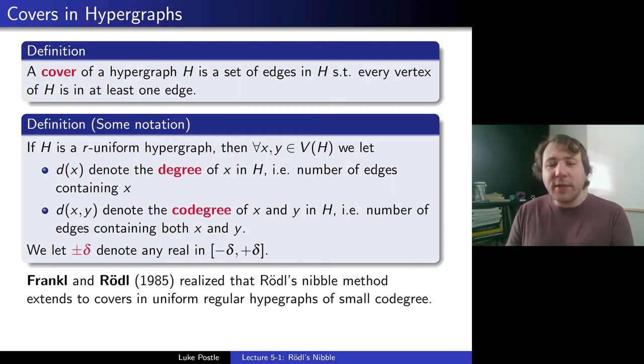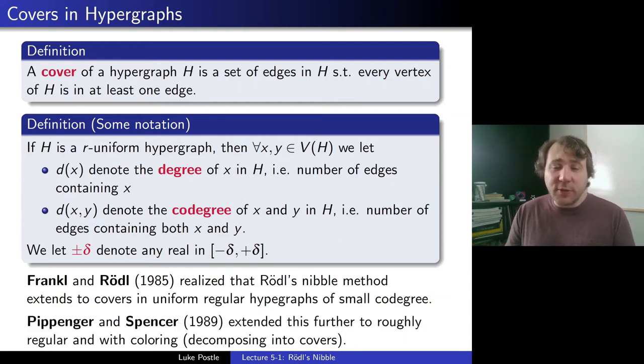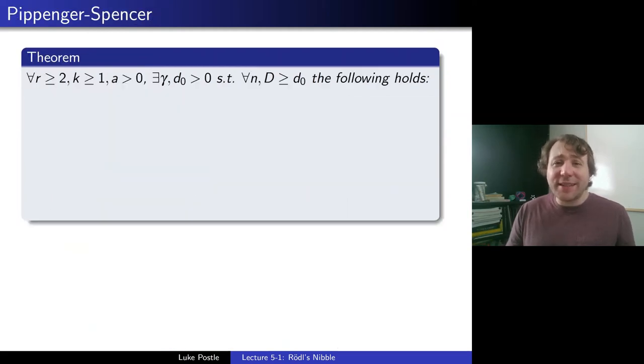So given that, now I will tell you where we're going to go from here. Fränkel and Rödel actually realized in the same year, after Rödel had published his paper, that Rödel's nibble method extends from this design setting to a more general setting, about covers in uniform regular hypergraphs of small co-degree. And Pippenger and Spencer, a few years later in 1989, extended this further to hypergraphs that are uniform but roughly regular, so all the vertices having roughly the same degree, and even extended it from just finding one packing or covering to coloring, which is somehow decomposing the graph into matchings and packings and/or covers.